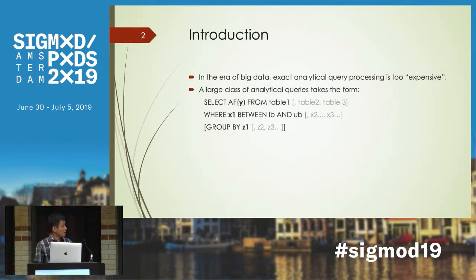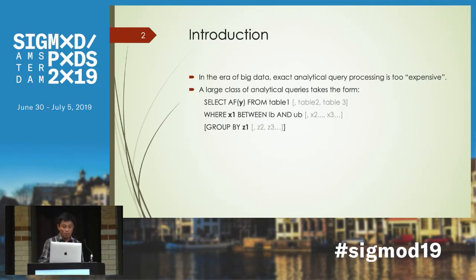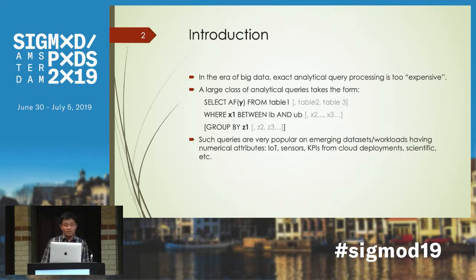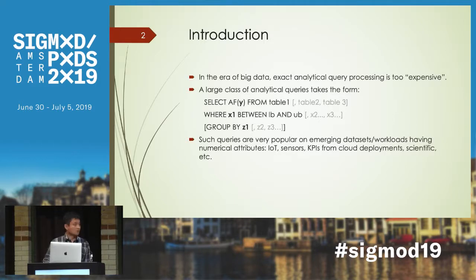A large class of queries takes the following form: SELECT aggregate FROM table WHERE x BETWEEN lower bound and upper bound, with optional GROUP BY and different selector operators. Such queries are very popular on many datasets, like the Internet of Things, sensors, and KPIs from cloud deployments.